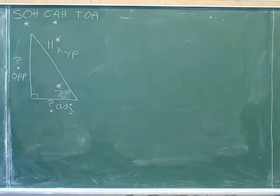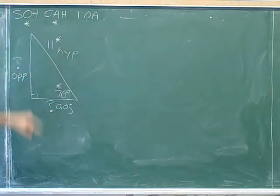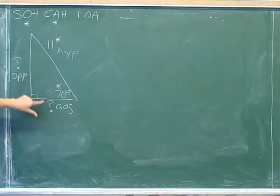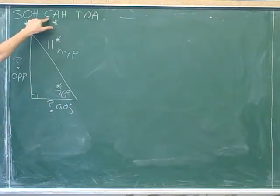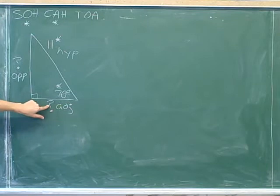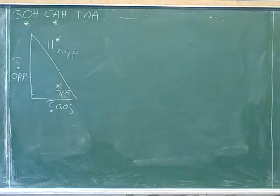So these are the two functions we're going to use. We will use the sine to figure out how long the opposite side is, and we'll use the cosine to figure out how long the adjacent side is. If you only needed the opposite side, you could just use the sine and forget about the cosine. Or if you only needed the adjacent side, you could just use the cosine and forget about the sine. We can use asterisks to remind ourselves of our plan — which trig functions we're planning to use.